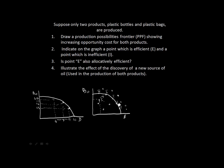Sub-question three asks: is point E also allocatively efficient? We said it's production efficient because it's a maximum combination of the two goods. But allocative efficiency is something else. Let's say we are at a point such as 8 bags and 15 bottles — that is production efficient — but whether it is allocatively efficient we don't know. The answer is not necessarily, because it depends on how the people in our society choose what they want. They might prefer more bags and fewer bottles, or more bottles and fewer bags. Whether it is allocatively efficient depends on our utility — the combination of goods that society desires.